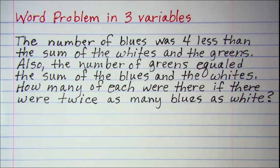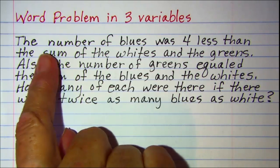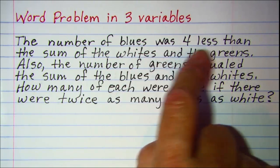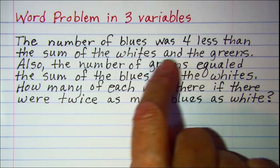In this video we'll be solving a word problem in three variables. The number of blues was four less than the sum of the whites and the greens.